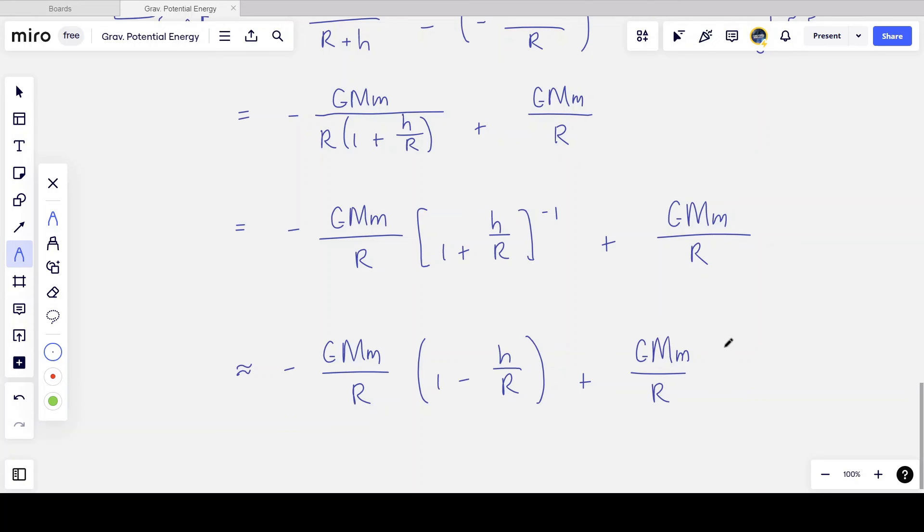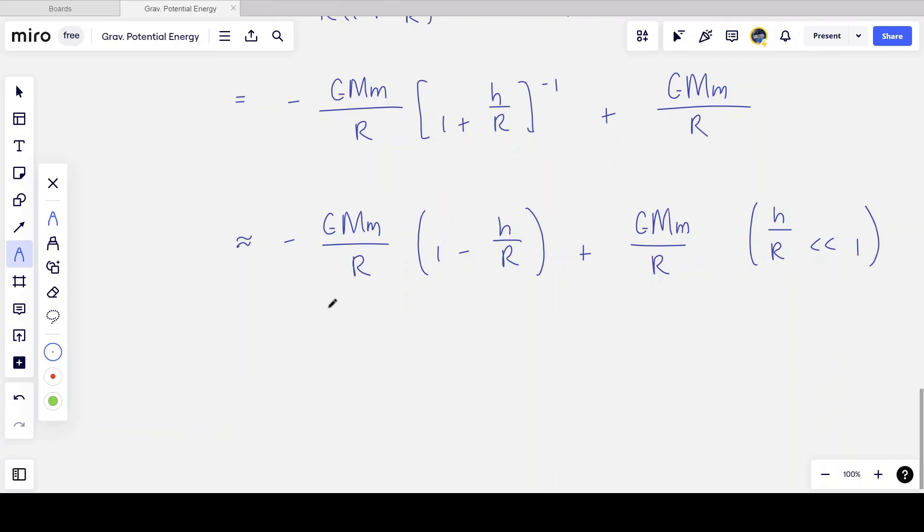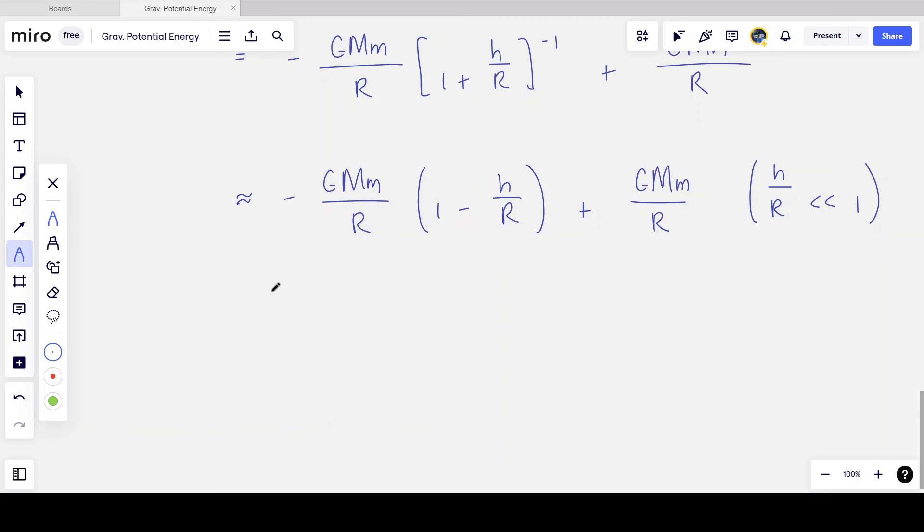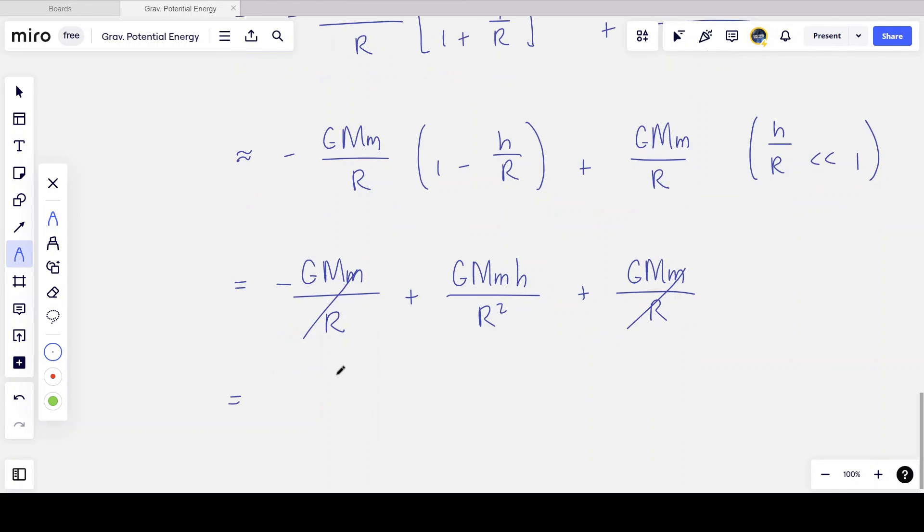And I add this to plus G m m over r. Now, why can I ignore the higher order terms and do the binomial approximation? Because remember, I said earlier on that h over r is much less than 1. And so h over r squared and h over r cubed, etc., higher order terms are tiny and they are neglected. And again, this all goes back to our approximation that h is much smaller than r. The object is close to the Earth's surface, not too far away. So where does this approximation get me? It gets me to G m m over r with a minus sign plus G m m h over r squared plus G m m over r. And we see that the G m m over r terms cancel.